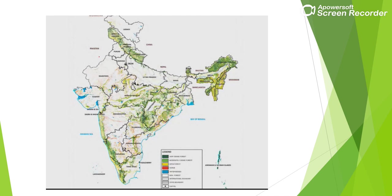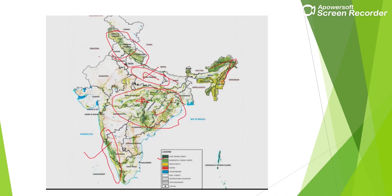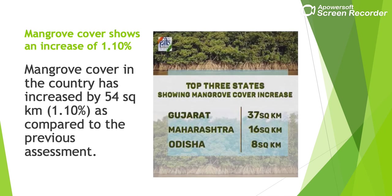Looking at India's map, dark green patches are seen in the North Eastern region, the Himalayas, the Central Plateau region, and the Western Ghats — all hilly areas with more forest cover. Plains have very little forest cover. For mangrove cover, it has increased by 54 square kilometers, with the highest increase shown by Gujarat, followed by Maharashtra, and then Odisha.